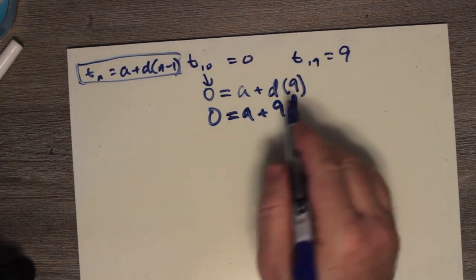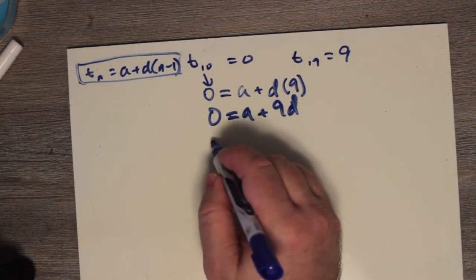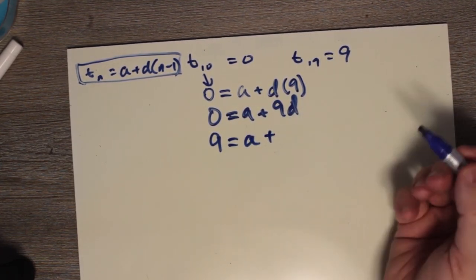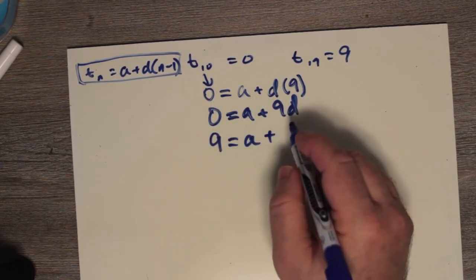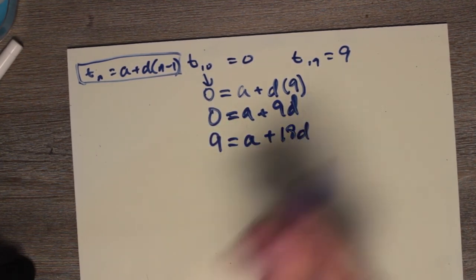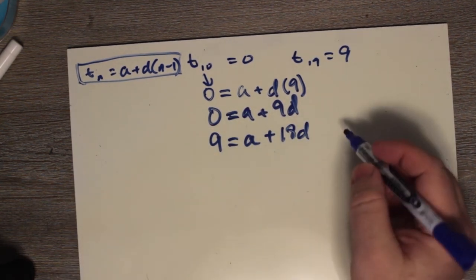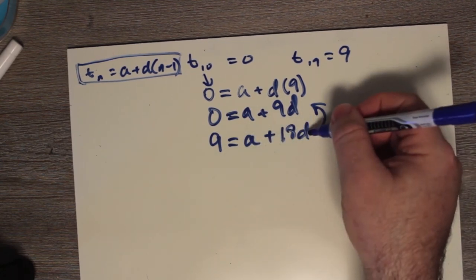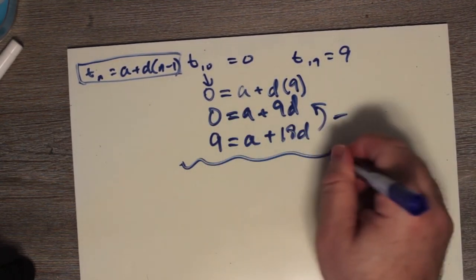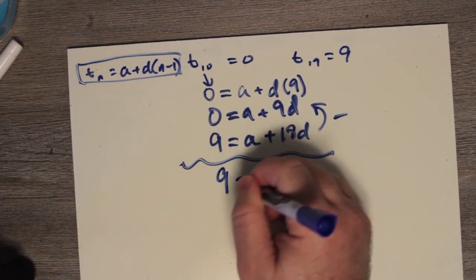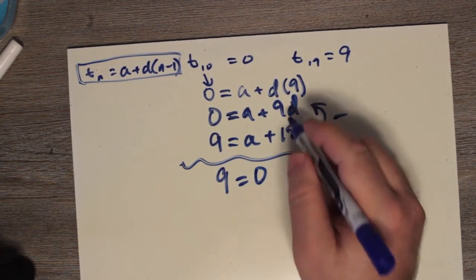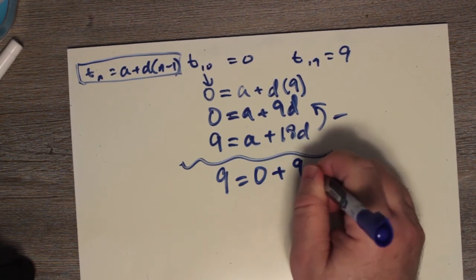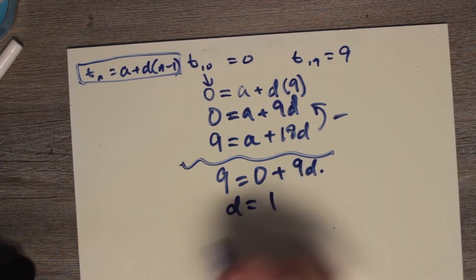For T19: 9 equals A plus 18D. We subtract the first equation from the second: 9 minus 0 is 9, A minus A is 0, and 18D minus 9D is 9D. So 9D equals 9, meaning D equals 1.